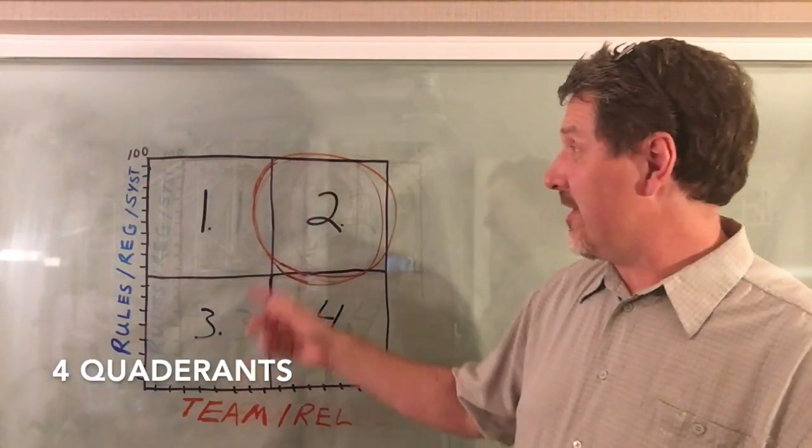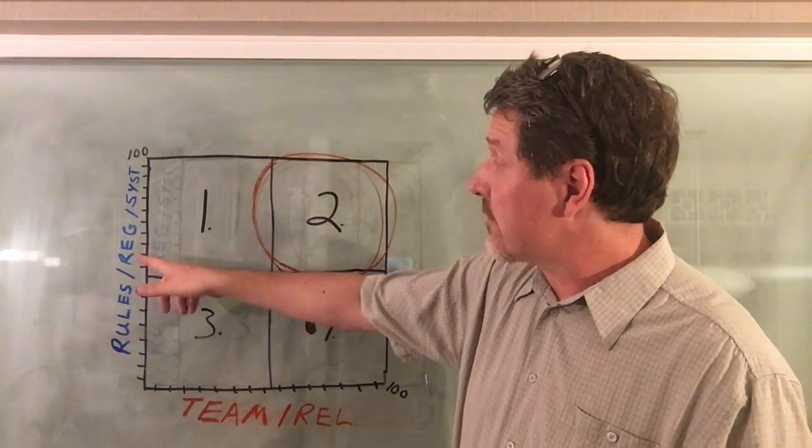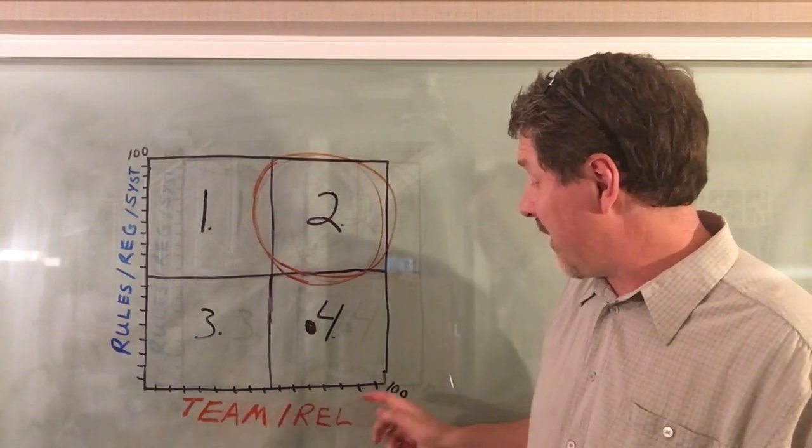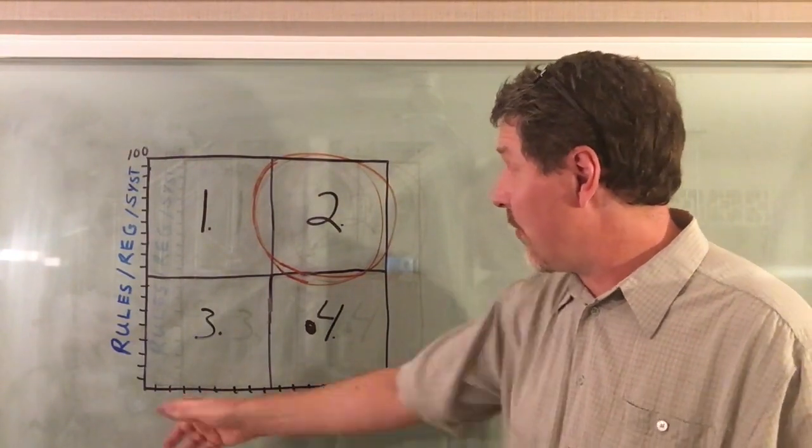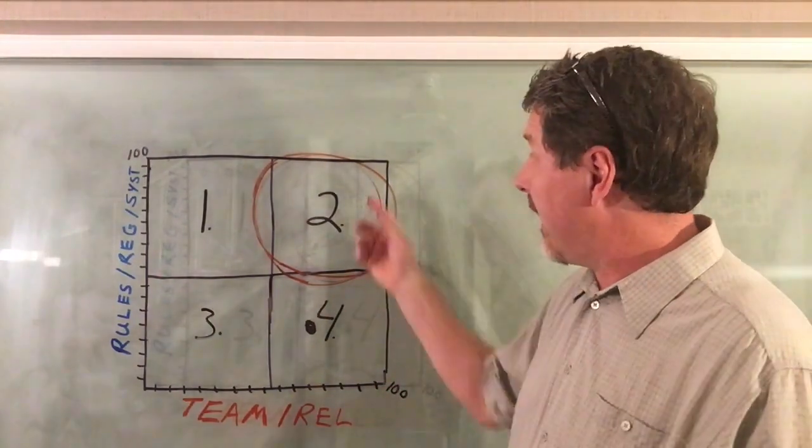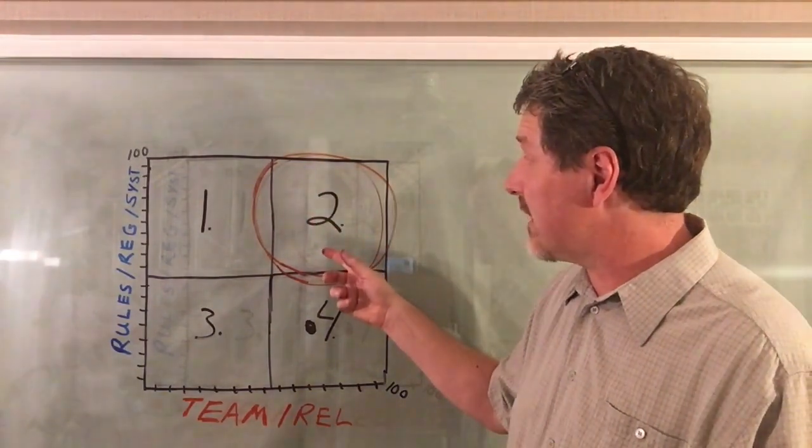In the four quadrant model, it's pretty self-explanatory. On the y-axis you have rules, regs, and systems, high and low. On the x-axis you have team and relationships, high and low. If you're running a crew or trying to create a great family, quadrant two is what you want to shoot for. That's where success lives, that's where high performance lives.